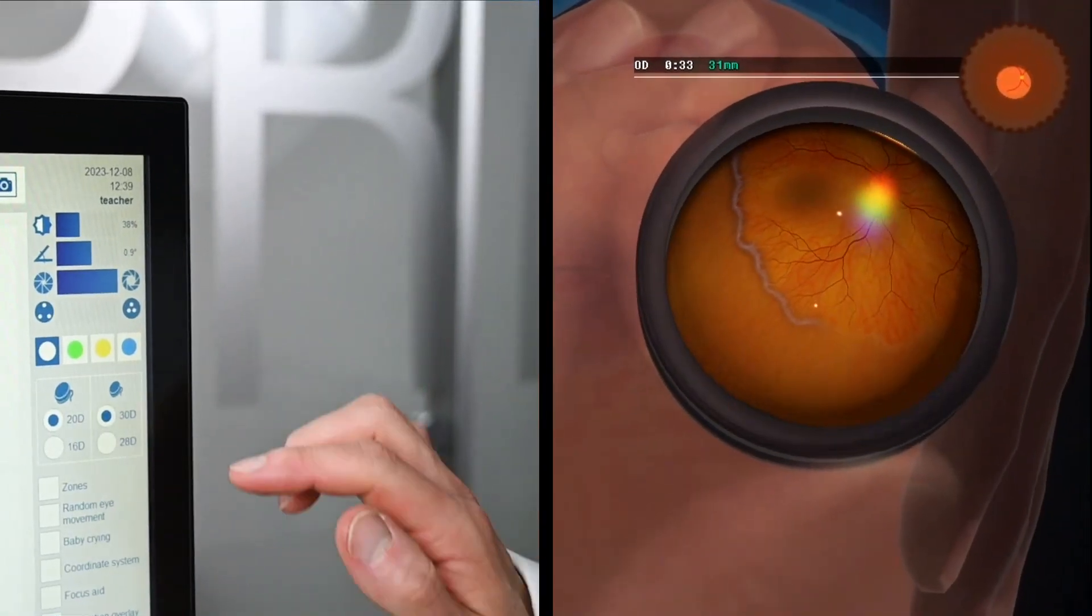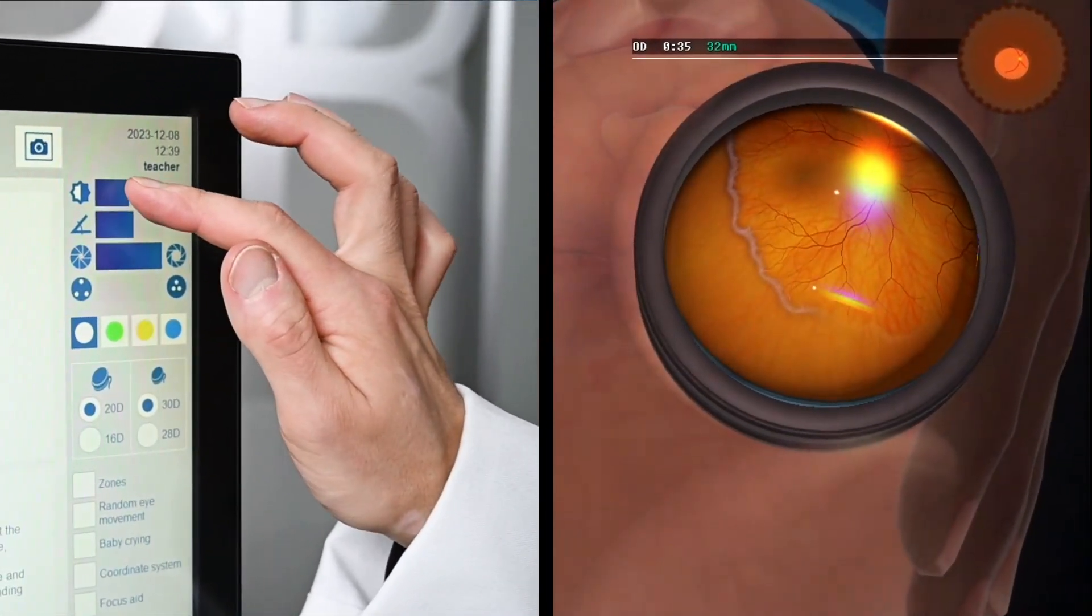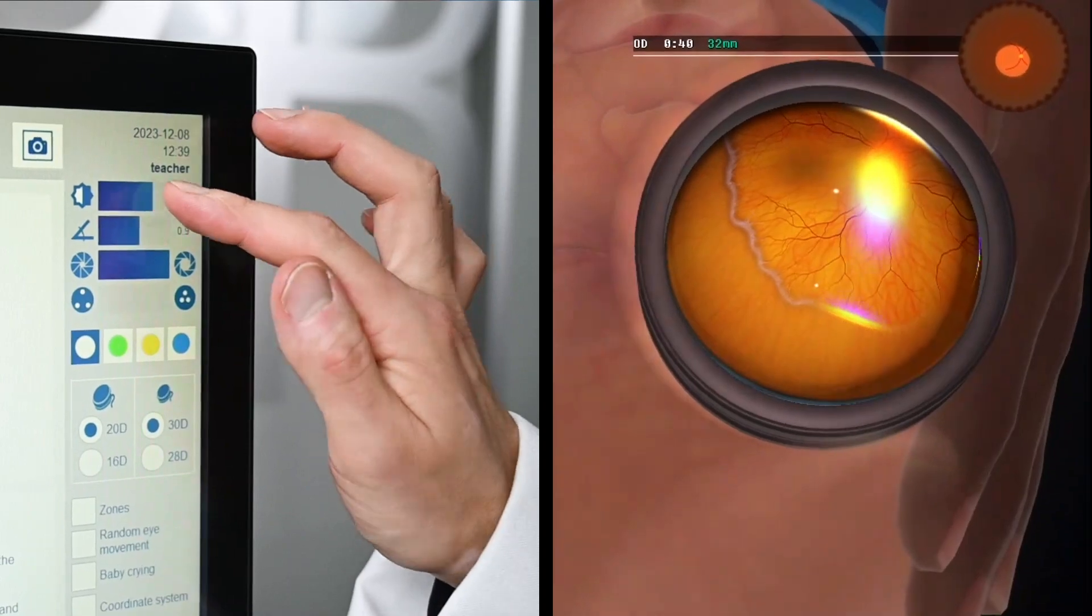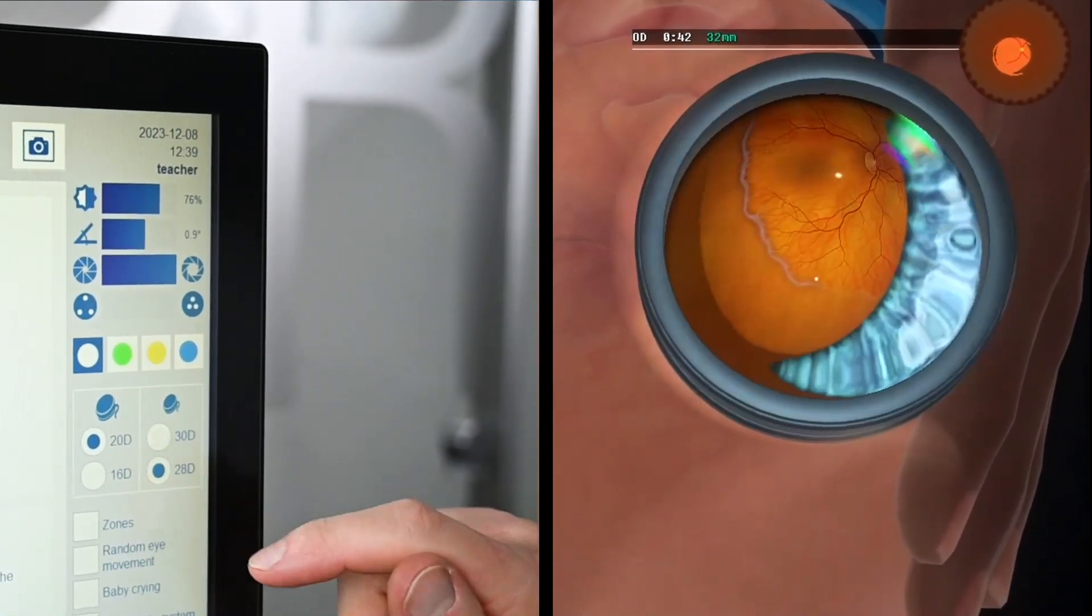On the touch screen, trainees can control the indirect ophthalmoscope settings, for example, light intensity and lens magnification.